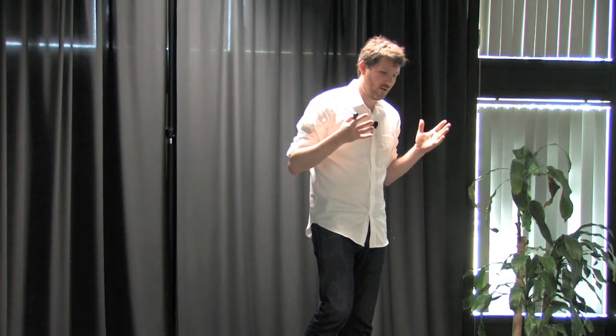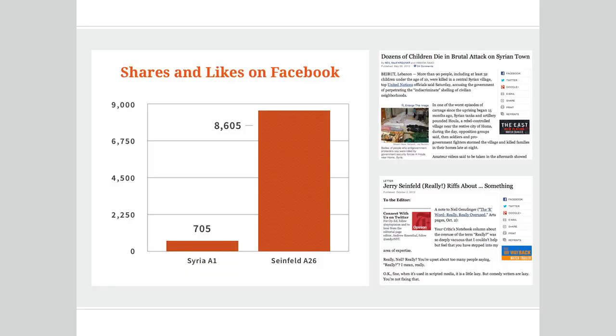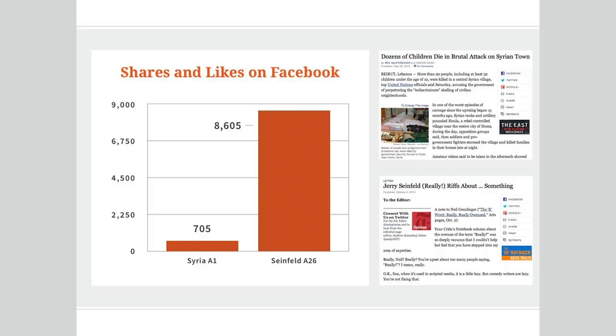I think we see this in the shift of where this information is surfacing. I looked at a front page New York Times story, this top one, a devastating story, really important for people to know about, about a genocidal attack in Syria. This was on page A1. In the old information economy, that would mean that lots of people see it. But as we shift to the news feed as a central place where information is surfaced, different information surfaces there. Weirdly, the Jerry Seinfeld letter to the editor on page A26 actually surfaces to way more people on Facebook than the page A1 story about Syria. This is the challenge that we're up against.